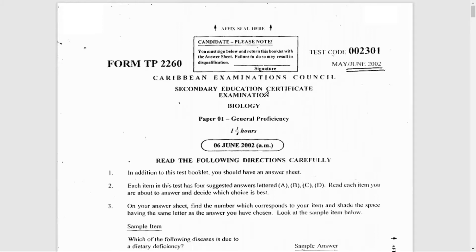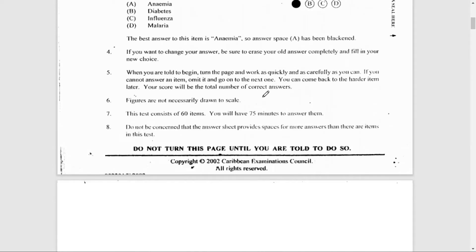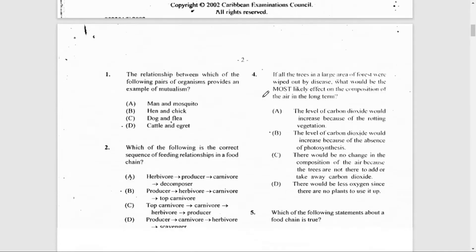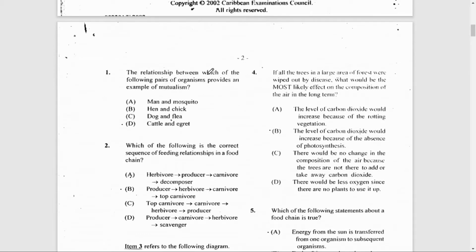Question 1: The relationship between which of the following pairs of organisms provides an example of mutualism? Well, in mutualism both organisms must benefit in that feeding relationship.